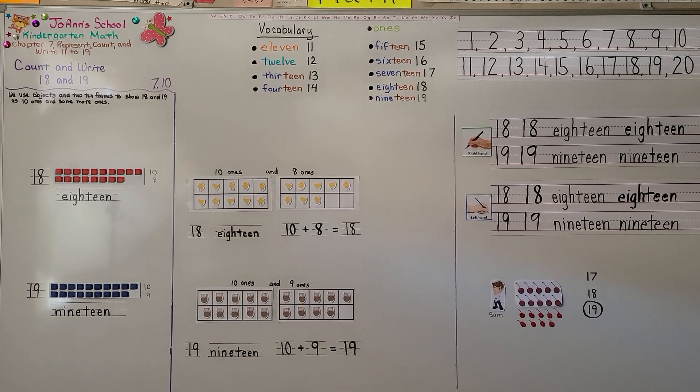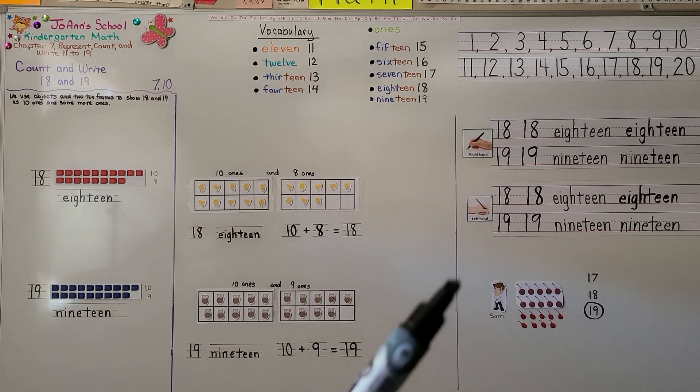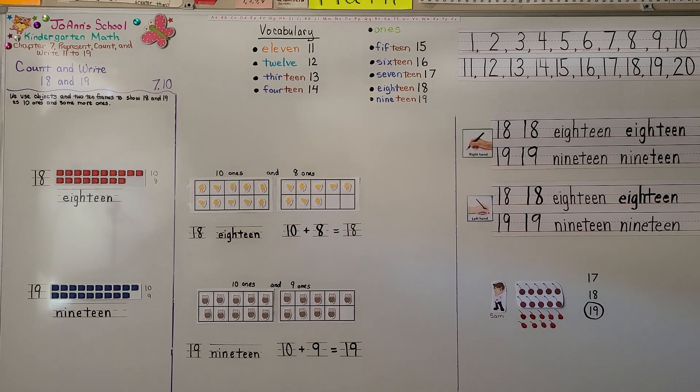You can practice counting and writing 18 and 19. Our next lesson is going to be chapter 8. We're going to be counting to 20 and beyond. That means we're counting to 20 and higher. I hope you'll join me and I hope you have a really great day. Bye.